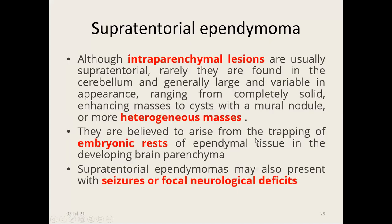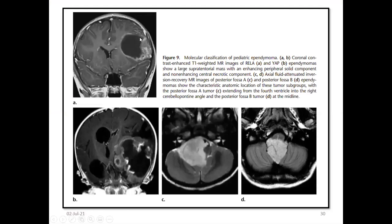Supratentorial ependymomas are mostly intraparenchymal lesions with heterogeneous enhancement, developing from the embryonic rest of ependymal tissue. Patients mostly present with seizures and focal neurological deficits. This is the RELA fusion parenchymal supratentorial lesion; this is the YAP1 fusion lesion. Group A tumors extend laterally through the foramen of Luschka; group B tumors extend toward the foramen of Magendie. All four molecular groups are illustrated together here.